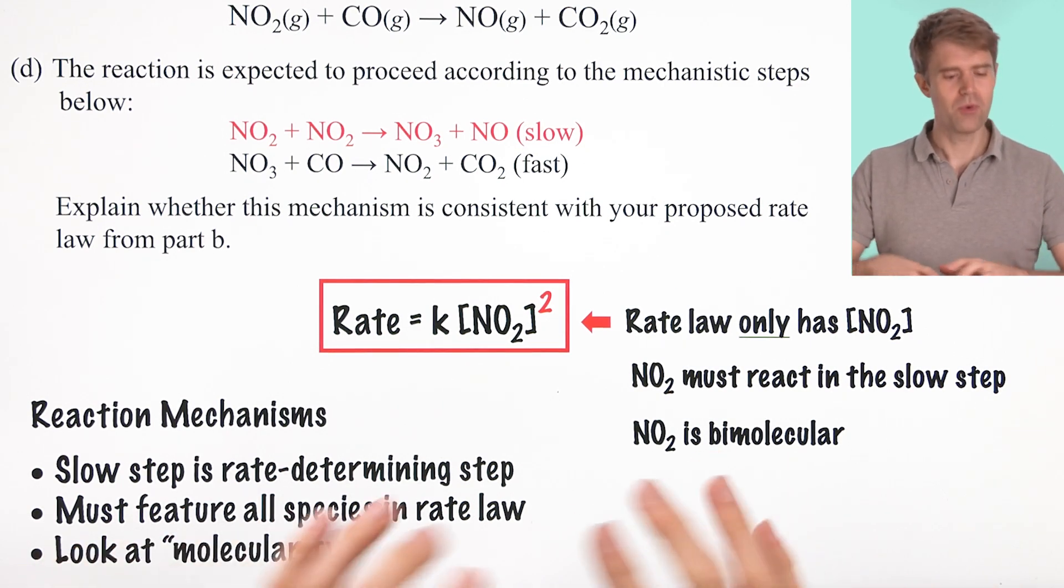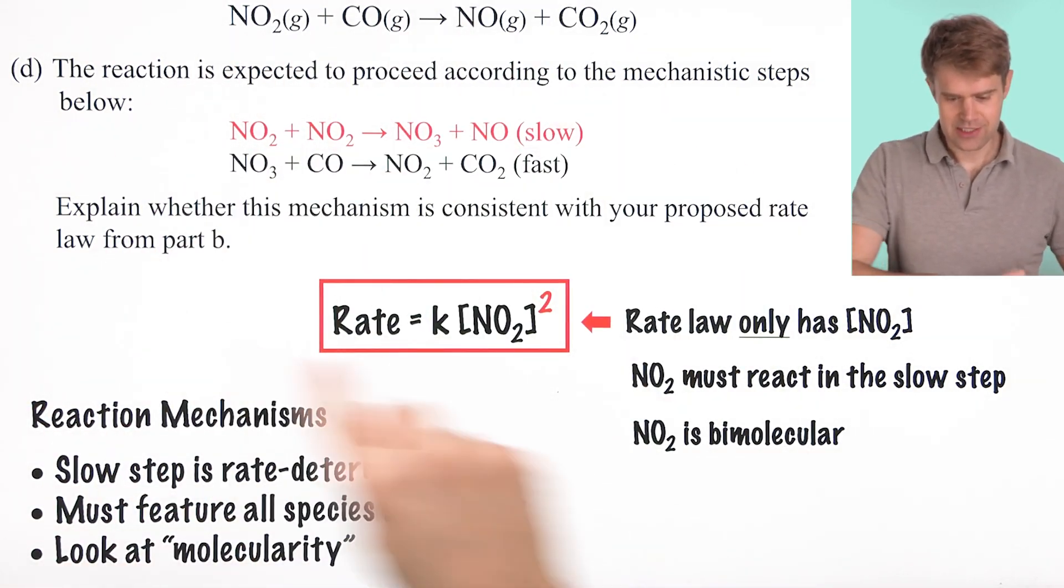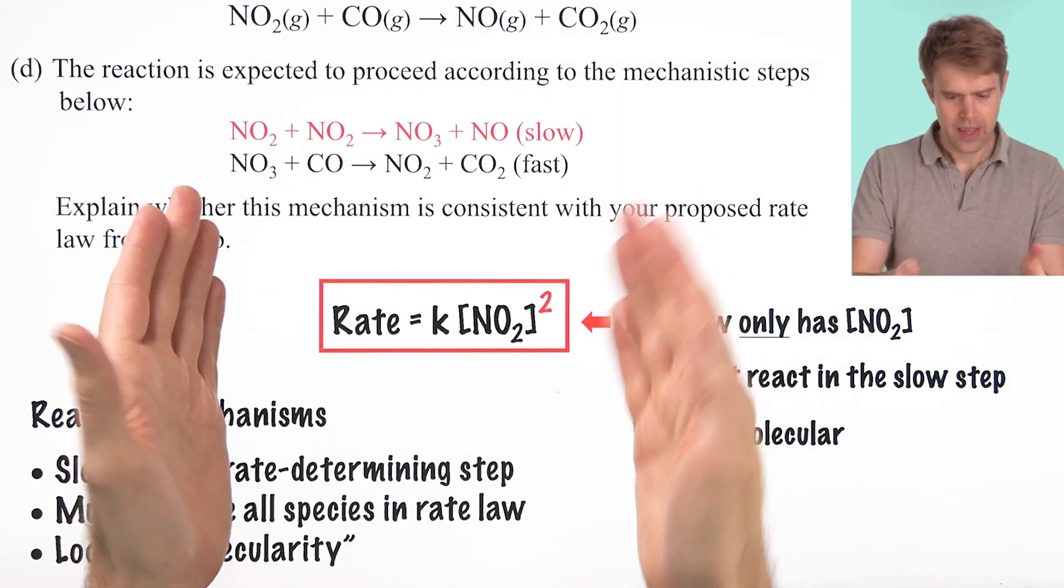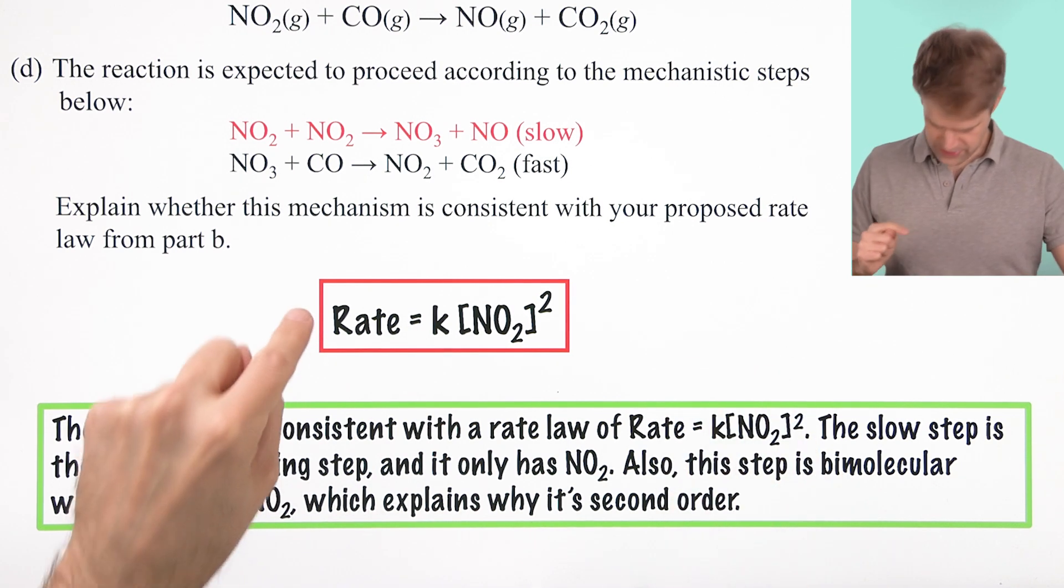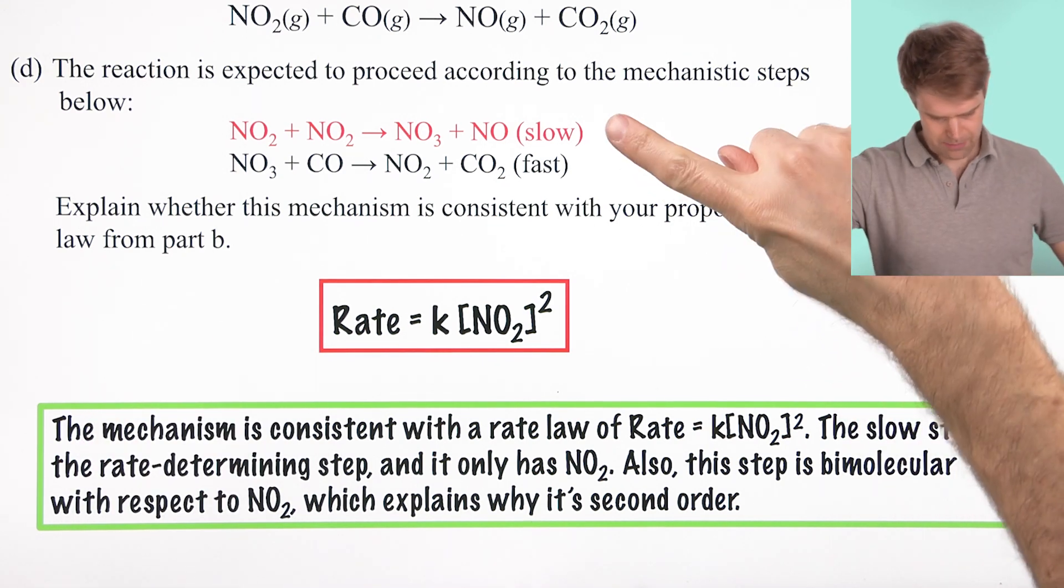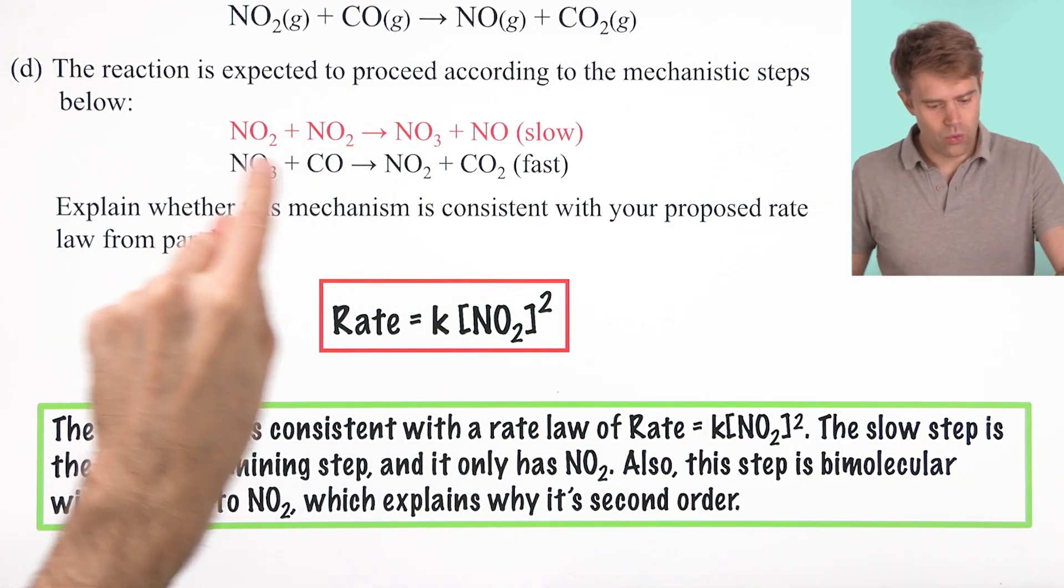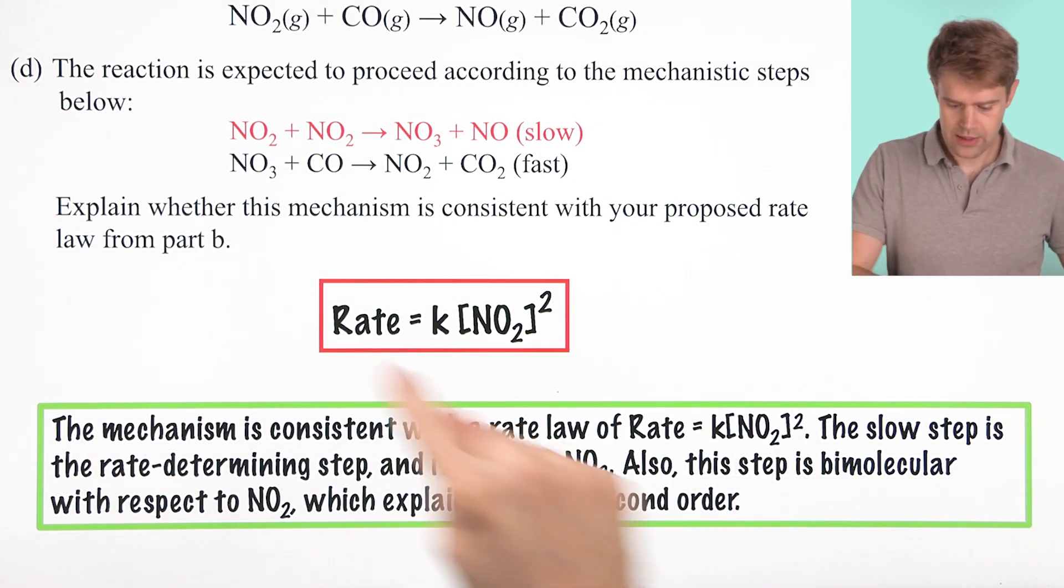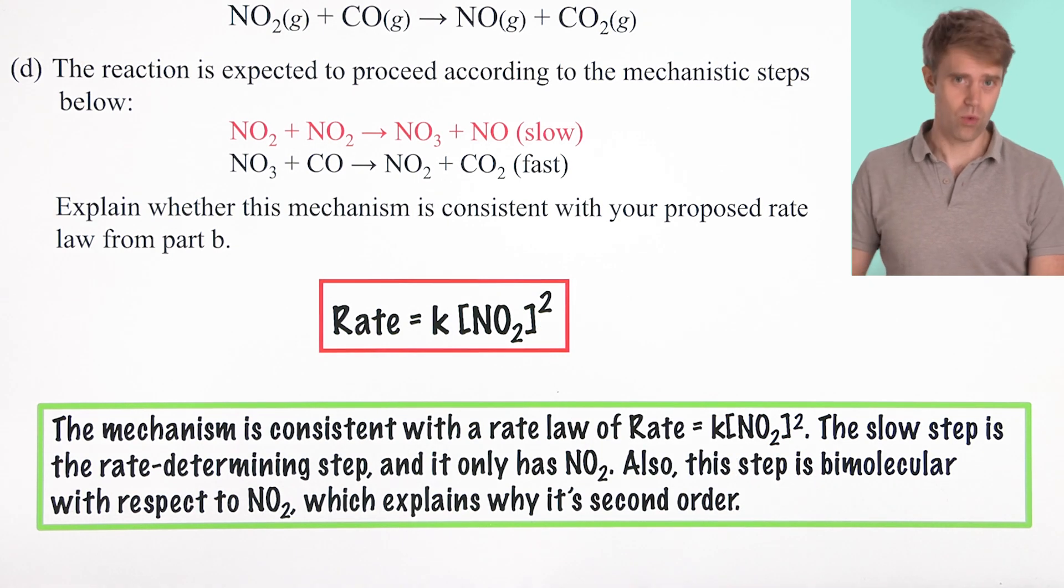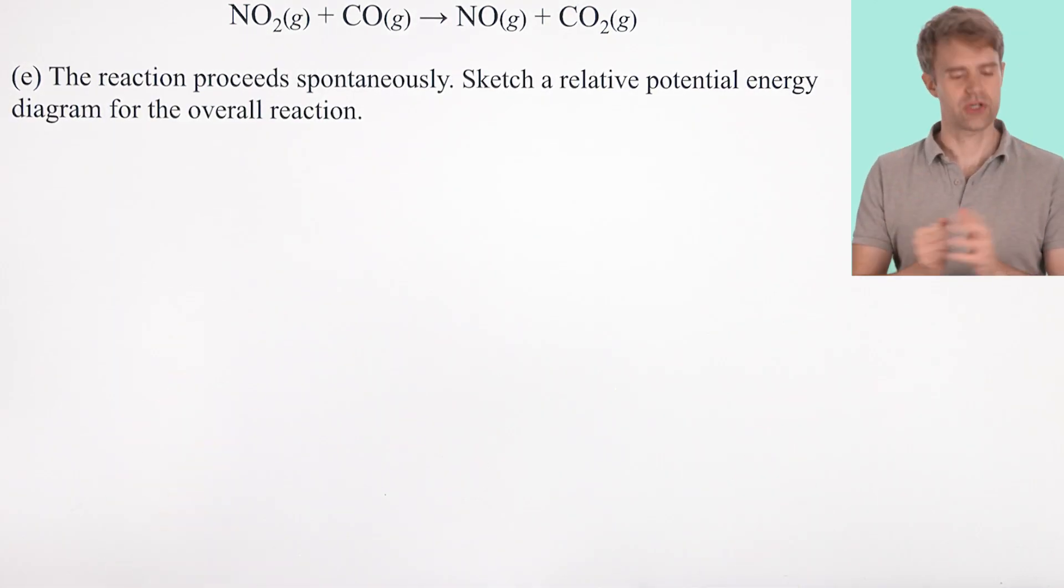So, putting all this together, this reaction mechanism is an excellent candidate. Now you can explain this in many ways, but your answer should look something like this. The mechanism is consistent with the rate law of this. The slow step is the rate determining step and it has only NO2. Also, this step is bimolecular with respect to NO2, which explains why it's second order. Okay, let's finish up.